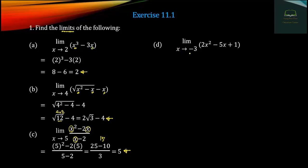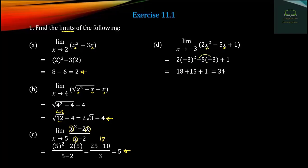Number 3: the limit as h tends to minus 3 of 2x² minus 5x plus 1. We can substitute x equals minus 3 directly. 2 times minus 3 squared minus 5 times minus 3 plus 1. Minus 3 squared is 9, so 2 times 9 is 18, plus 15 plus 1.